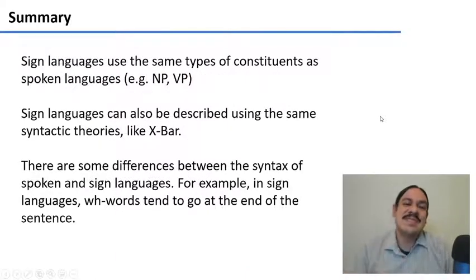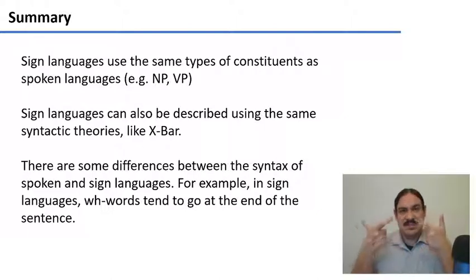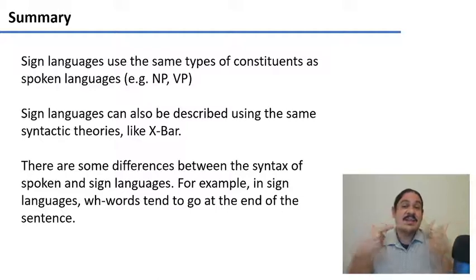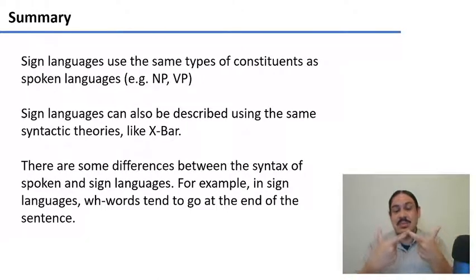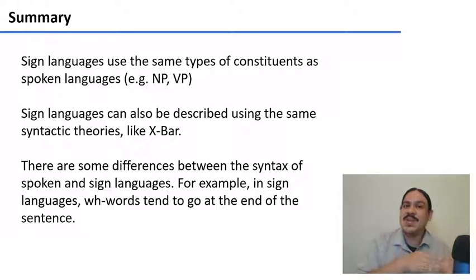Except for a few differences, sign languages and spoken languages use essentially the same type of syntax. Both modalities are made up of constituents, like noun phrases and verb phrases, and these constituents can be combined using the rules we've analyzed — for example, using an X-bar structure. There are some differences, like the placement of wh-words such as what, who, and where, but for the most part, the syntax we use for one modality we can also use to describe the other.